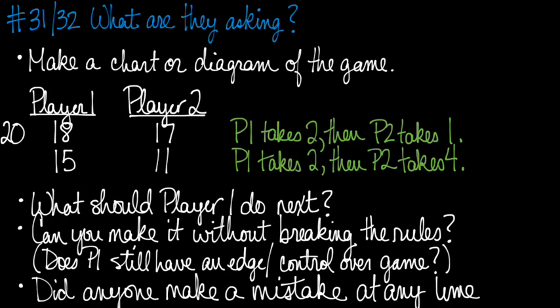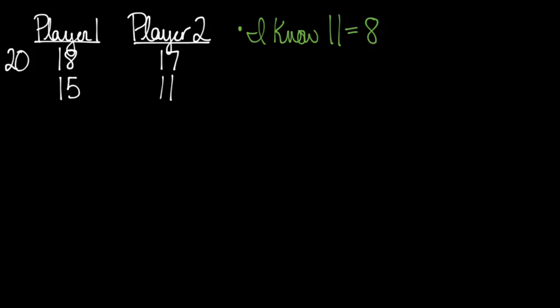And finally, the book says, did you make a mistake at some point if so where? And I'm going to go a little farther and analyze this entire game blow by blow and figure out if anyone made a mistake at any time. So here's the chart again with all four turns labeled.